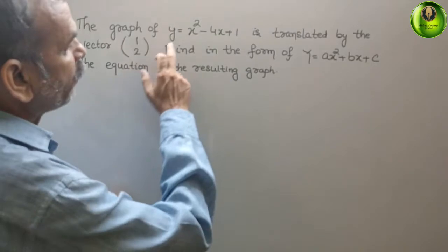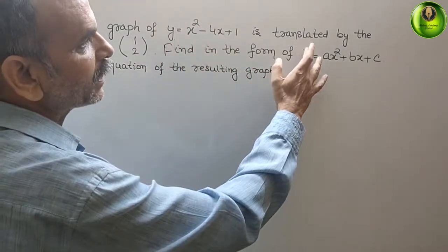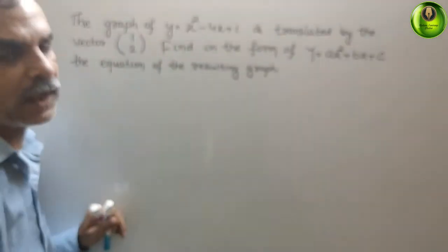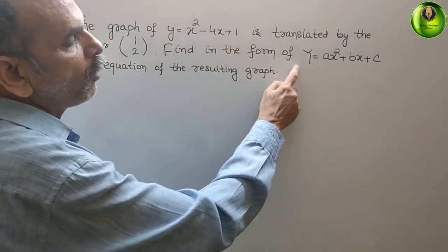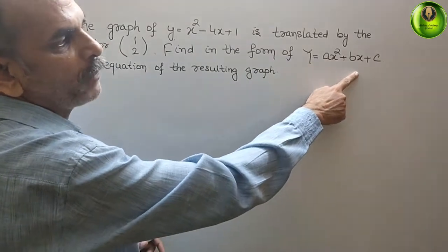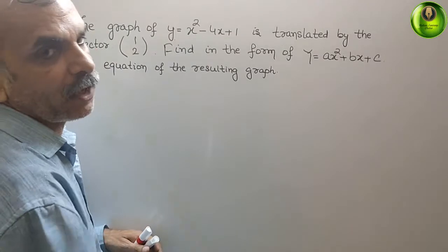Your question is, the graph of y equals x square minus 4x plus 1 is translated by the vector 1, 2. Find in the form of y equals ax square plus bx plus c, the equation of the resulting graph.